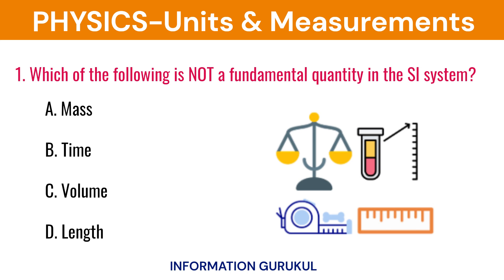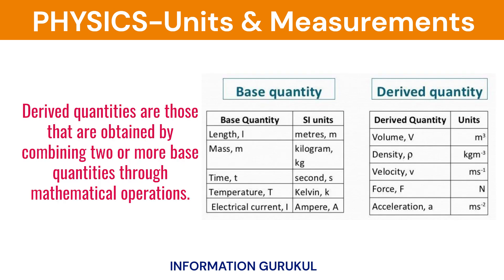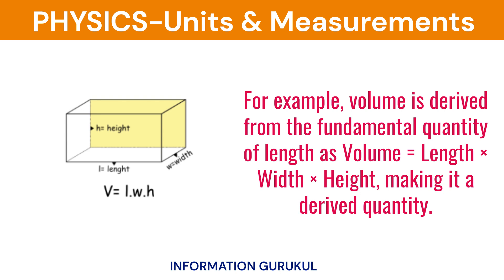Which of the following is not a fundamental quantity in the SI system? Volume. Volume is a derived quantity. Derived quantities are those that are obtained by combining two or more fundamental quantities through mathematical operations. For example, volume is derived from the fundamental quantity of length as volume equals length times width times height, making it a derived quantity.